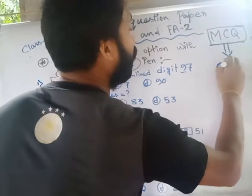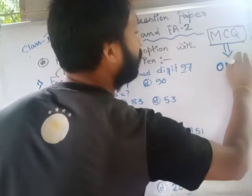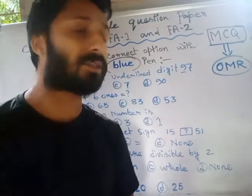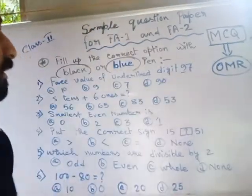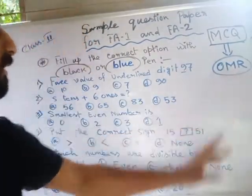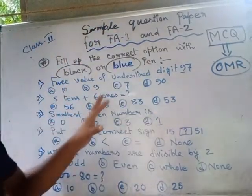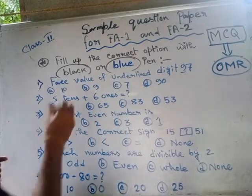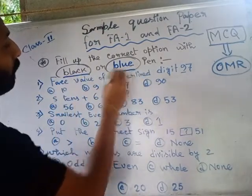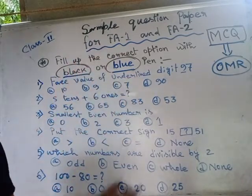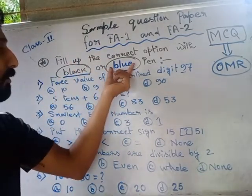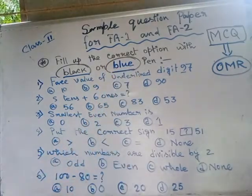Normally you would need a OMR sheet machine, but in this crucial situation due to COVID-19 we are unable to give you the OMR machine. That's why you should fill up the answer in this question paper. You can only use a black or blue pen — only one color consistently throughout.